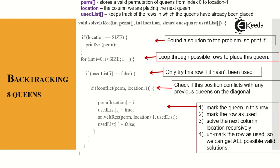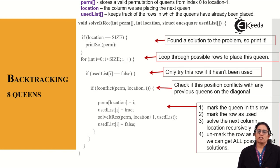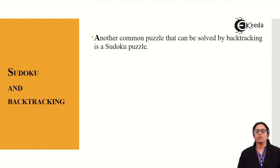For all permutations and combinations of placing my eight queens, if I find a valid position I will place the queen, mark that particular row as used, and also mark the column and diagonals as used. Once the queen is placed in a row, another queen cannot be placed there. We then solve the next column recursively. If a conflict occurs, I unmark the row that was being used.